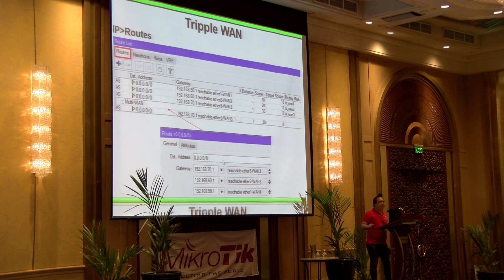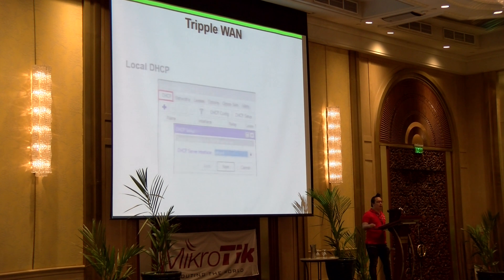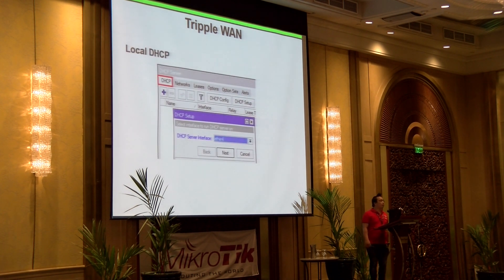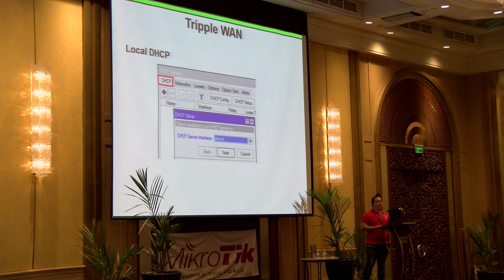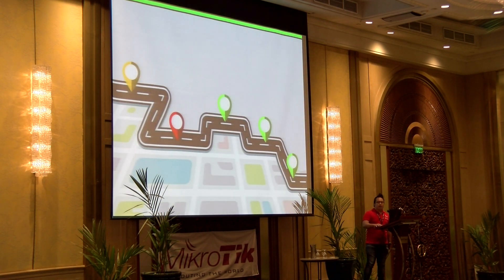Then lastly, in the basics is your DHCP on port number 4. So we just set up triple one — smooth triple one — so that we could start and continue our learning.